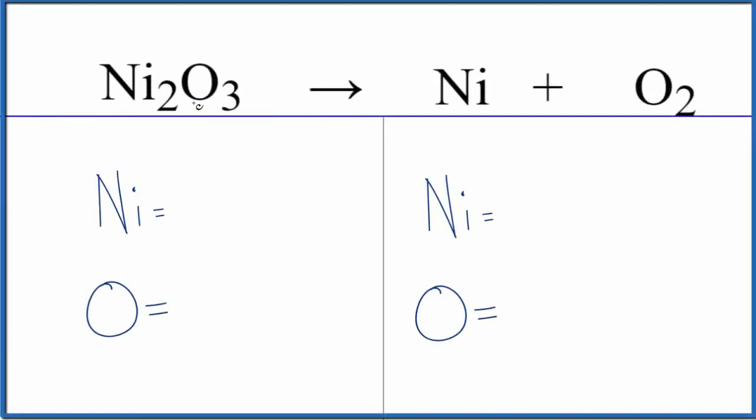Let's balance the equation for Ni2O3, decomposing into nickel plus oxygen. I'm guessing you're probably putting some heat in here to make this happen, for this to decompose. So, to balance the equation, let's count the atoms up.